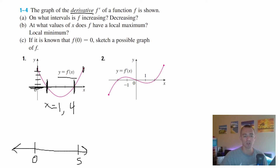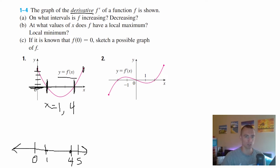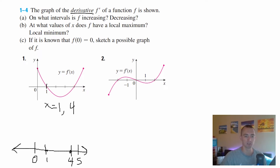Let's start with a number line. Our function f exists between x equals zero and x equals five, because our derivative ends at those points. We know that f has a slope of zero at x equals one and x equals four. So everywhere between zero to one, one to four, and four to five must be either increasing or decreasing. To figure out which is which, we go back to our graph of f prime — the output of f prime tells us the slope of f at any given x value. Between x equals zero and x equals one, f prime is above zero the whole time, in the positive y direction.